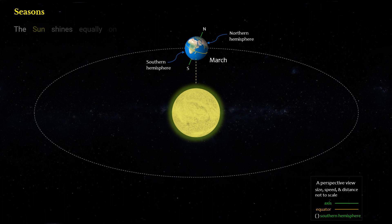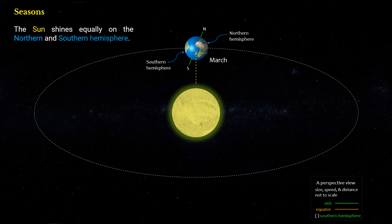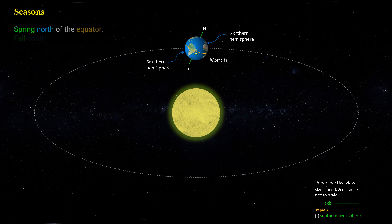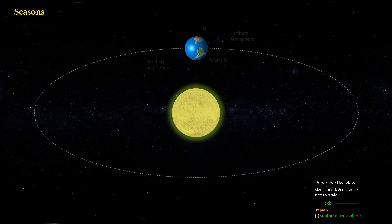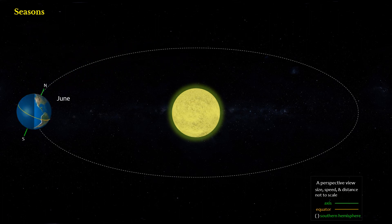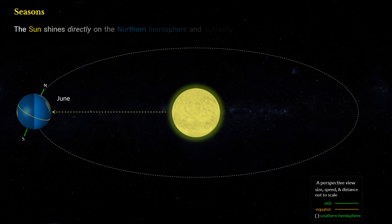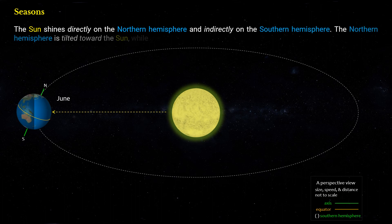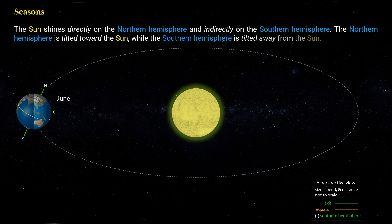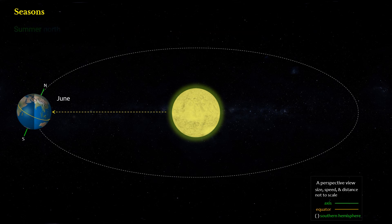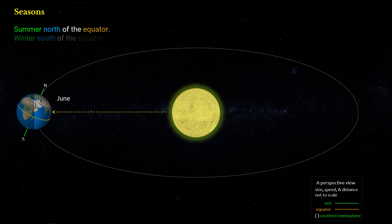In March, the Sun shines equally on the Northern and Southern Hemisphere — spring north of the equator, fall south of the equator. In June, the Sun shines directly on the Northern Hemisphere and indirectly on the Southern Hemisphere. The Northern Hemisphere is tilted toward the Sun, while the Southern Hemisphere is tilted away — summer north of the equator, winter south of the equator.